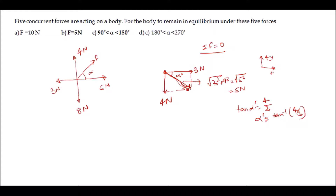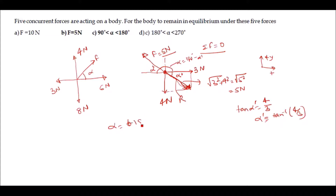For the whole body to be in equilibrium, the fifth force F must be equal and opposite to this resultant force R. So F = 5 newton. The angle alpha of this fifth force will be alpha = 180° − alpha dash = 180° − tan⁻¹(4/3). This angle lies in the second quadrant, so option C is correct: 90° < alpha < 180° and F = 5 newton.